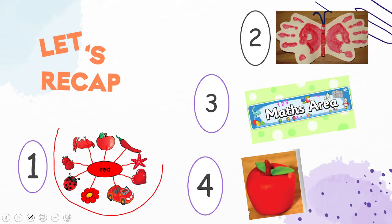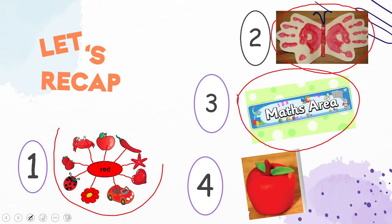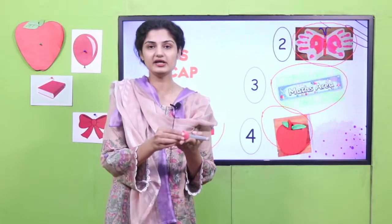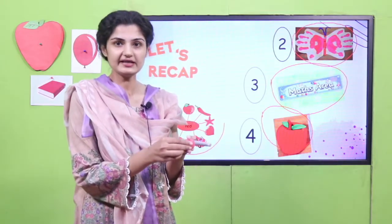After that, we made a butterfly with the red handprint. And then what we did next, we counted all the red objects in the math area. And in the end, we made a red apple with play-doh. Here is the apple we made in the previous activity.